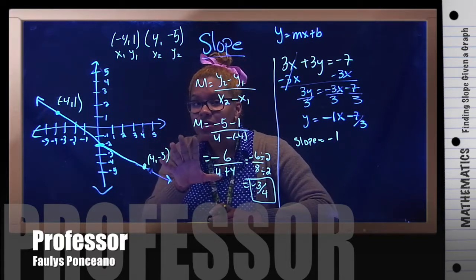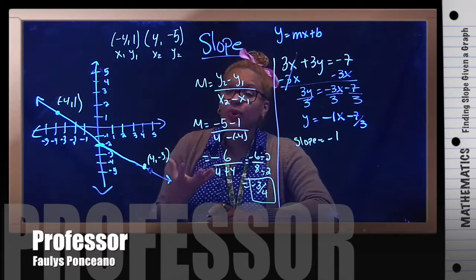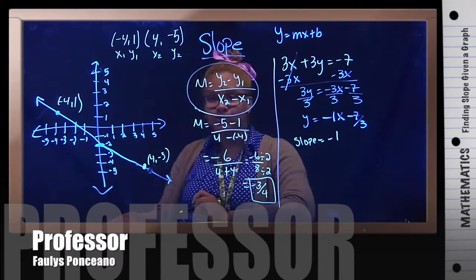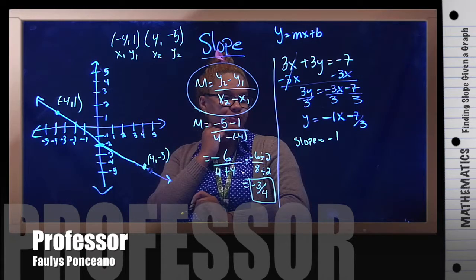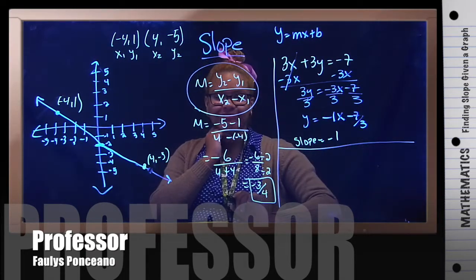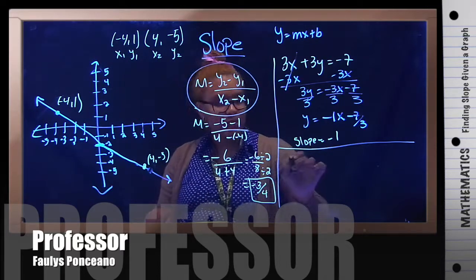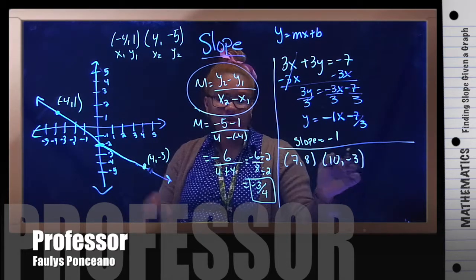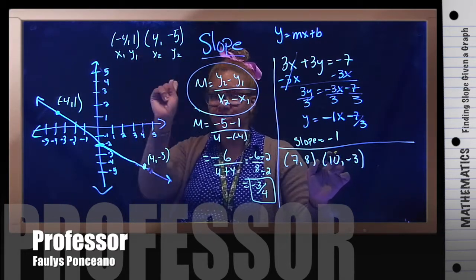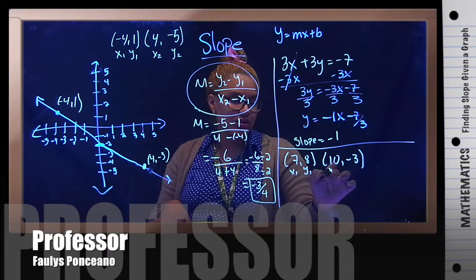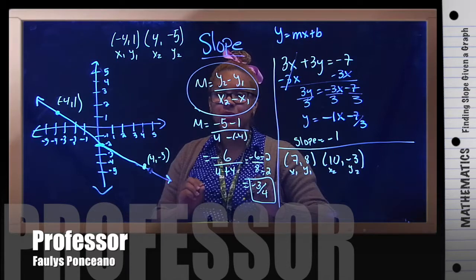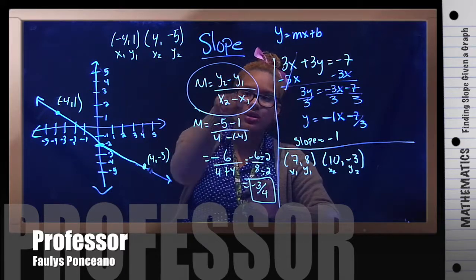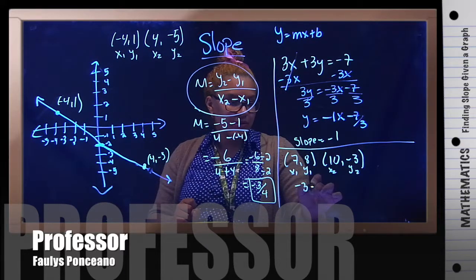You will have another example where you are given two points and need to find the slope. If given two points, you use the slope formula. My two points are 7 comma 8 and 10 comma negative 3. Step one: label your points x1, y1, x2, y2. Step two: use the slope formula.